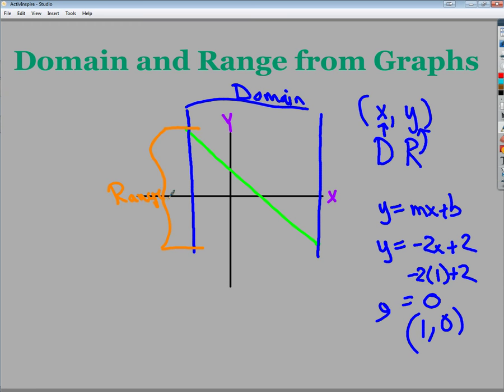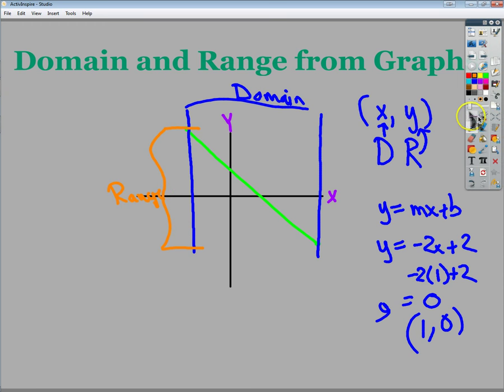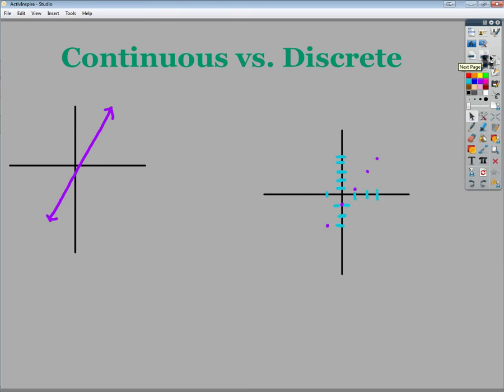So my domain values would be my x's and my range values would be my y's. So let's talk a little bit more about the graphs for a second. And we'll talk about notation and then we'll be on our way.